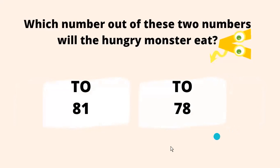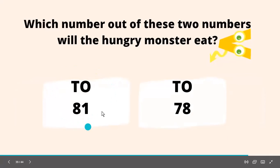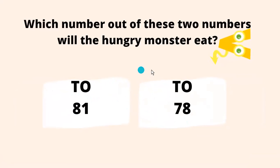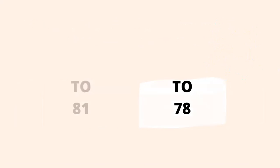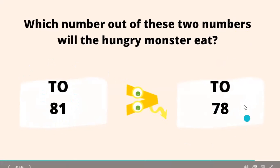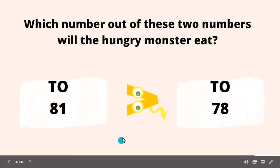Which number will the hungry monster eat now — 81 or 78? We have to compare both numbers. The digit at the leftmost place is 8 for 81 and 7 for 78. Now you have to tell which number is greater for the hungry monster to eat. Can you tell? Of course you can! Very good — 81 is bigger than 78, so the hungry monster is going to eat 81!